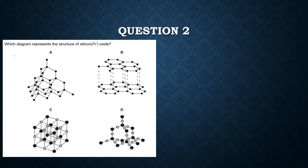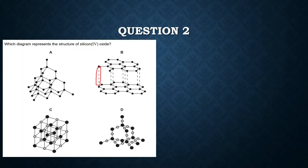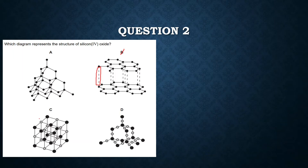Question number two: which diagram represents the structure of silicon oxide? In option B there are dotted lines, which represent weak layers always found in graphite — graphite is used in pencil tips — so B is eliminated. Option C is in the form of a cube lattice, which would only be an ionic compound like NaCl, so C is also eliminated. We are left with A and D.